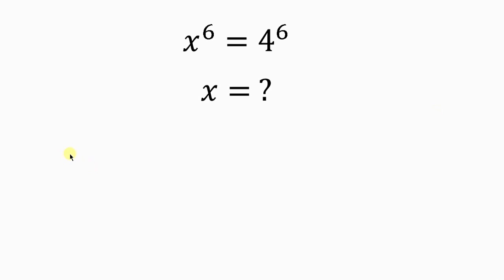What's going on everybody? We have a beautiful question on the board which says we have to look for the value of x for which x to the 6 is equal to 4 to the 6. Our first step towards solving this question will be to move 4 to the 6 to the left hand side. So we have x to the 6, and as 4 to the 6 crosses to the left it becomes minus 4 to the 6, and this is equal to 0.